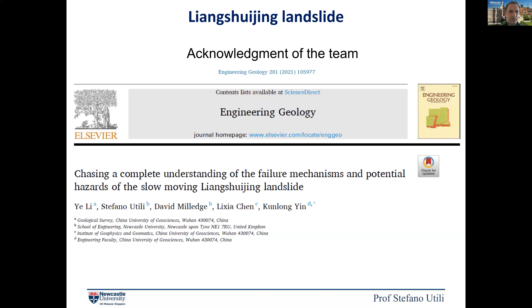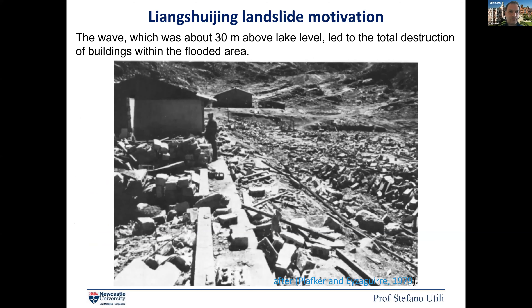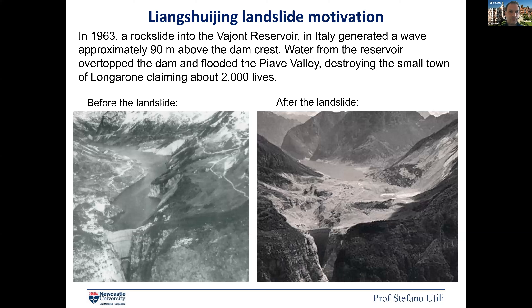Whatever was in the way of the wave was swept away — clearly very powerful in terms of destructive power, reaching 30 meters above the lake level. Perhaps the most well-known example is the Vajont landslide, which happened in 1963 in Italy. A huge chunk of the mountain fell into the reservoir, generating a wave 90 meters above the dam. Funnily enough, the dam withstood the load, but the mud flow swept away the village underneath, claiming around 2,000 lives.